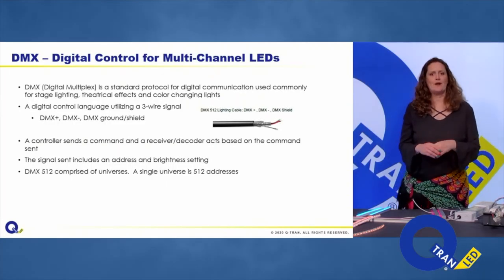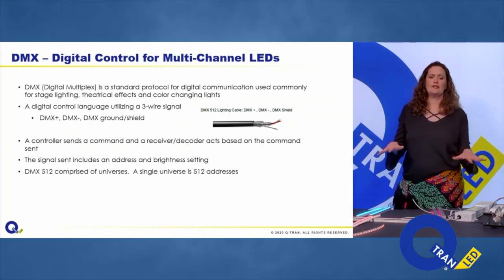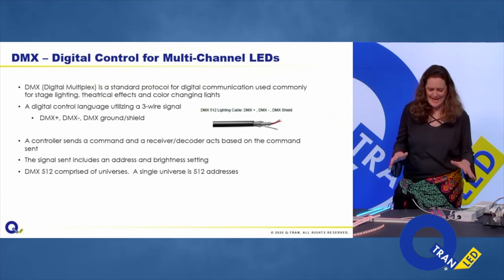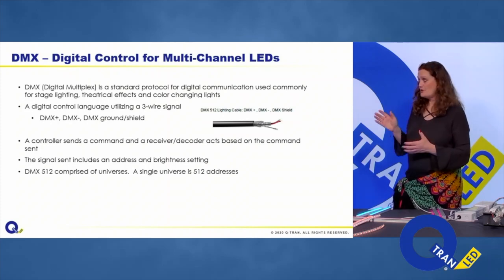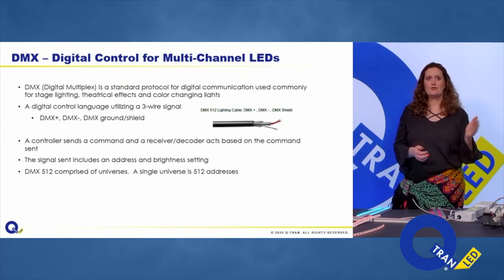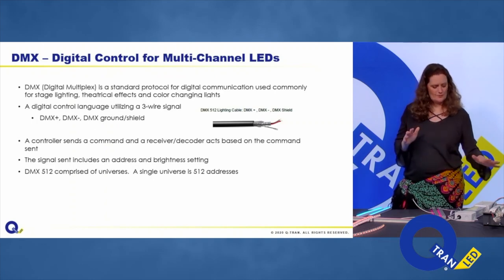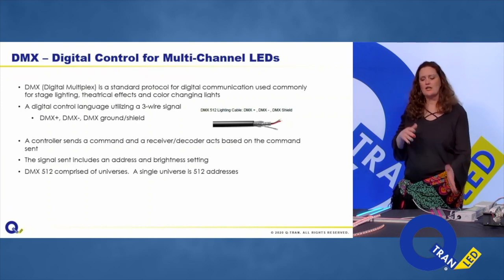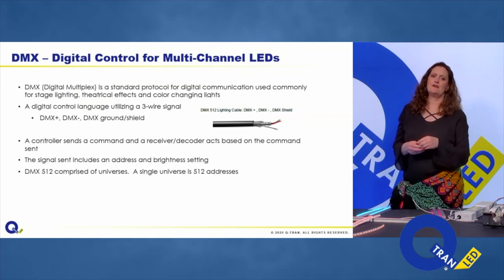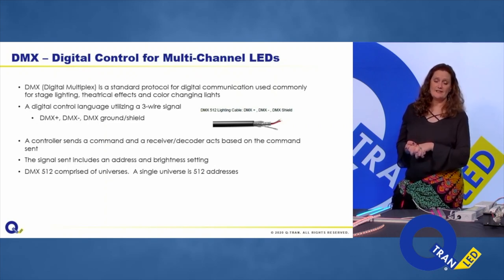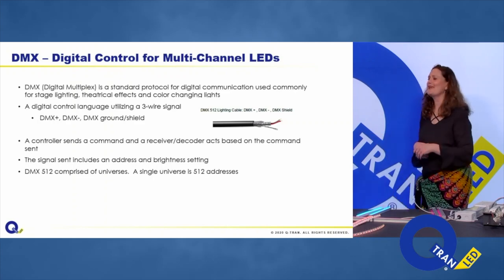Digital control systems communicate via DMX. We could do two hours on DMX, but DMX stands for Digital Multiplex — it's a digital control signal. A controller sends a command and the receiver acts on it with a color and brightness. That's the key difference from a single-channel static strip. A DMX universe has 512 channels, which ties back to 8-bit color: 256 integer values per channel, and 256 × 2 = 512. It's all math and it's all related.